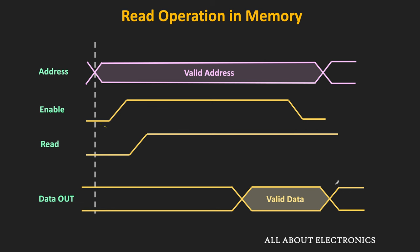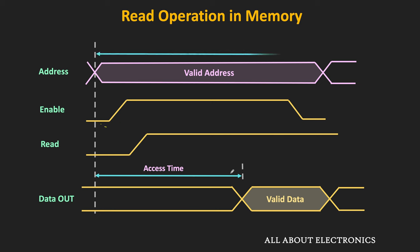The time between when the valid address is applied to the memory and when valid data is available on the output is known as the access time. The time after which the next valid address can be applied to perform the next read or write operation is known as the cycle time.